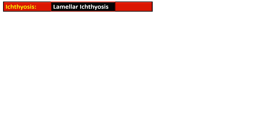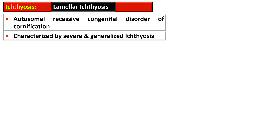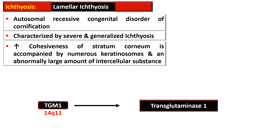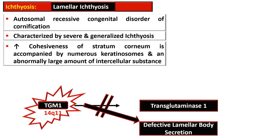The lamellar variety of ichthyosis is an autosomal recessive congenital disorder of cornification characterized by severe and generalized ichthyosis, with increased cohesiveness of the stratum corneum accompanied by numerous keratinosomes and large amounts of intercellular substance. The mutated gene is Tgm1, which encodes transglutaminase, located on the long arm of chromosome 14. When mutated, it results in defective lamellar body secretion, leading to lamellar ichthyosis.